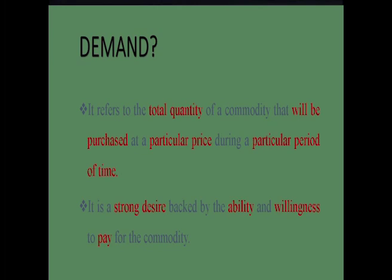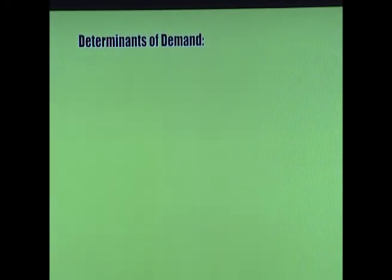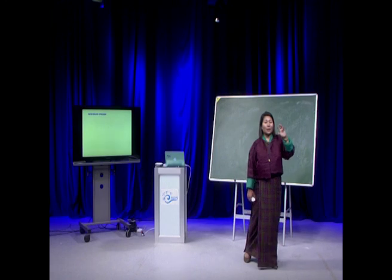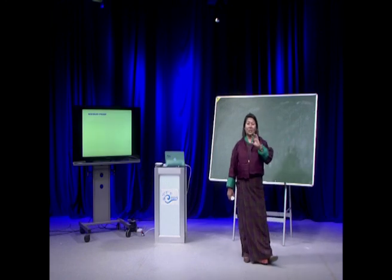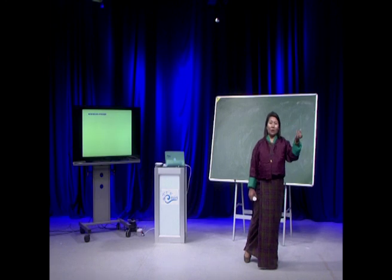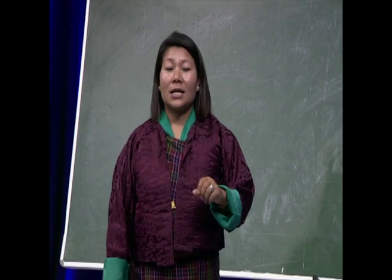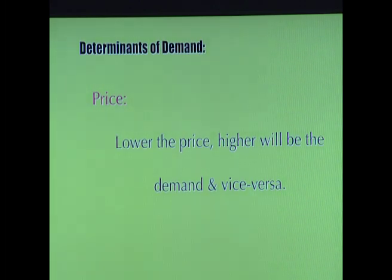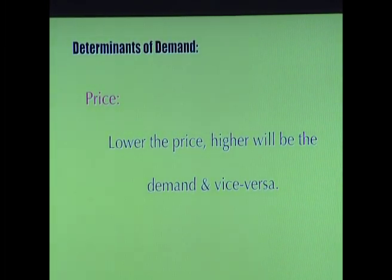Now we move to the determinants of demand — what makes demand more or less. The first factor is price. In economics, price will follow us everywhere. Lower the price, higher will be the demand, and vice versa. Imagine yourself as a consumer: when will you buy more — when the price is less or when the price is high? Obviously when the price is less, we'll buy more, and we'll buy less when the price is high.